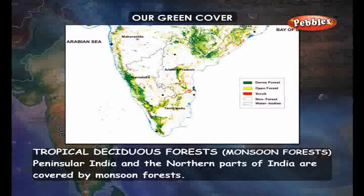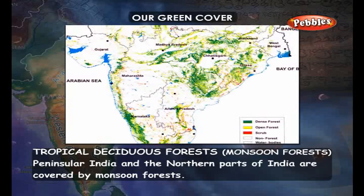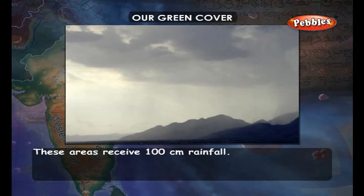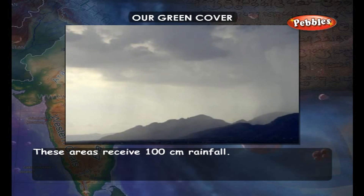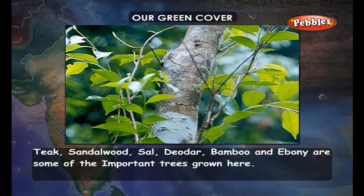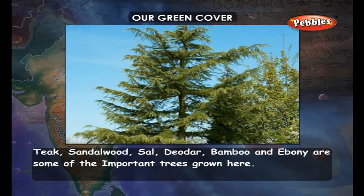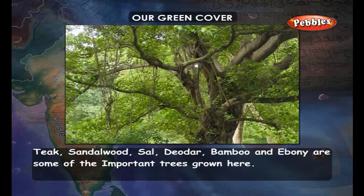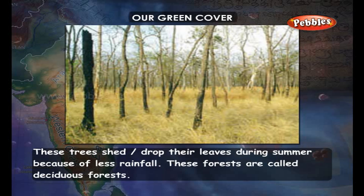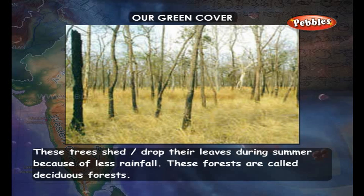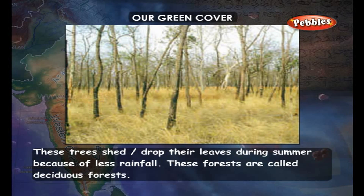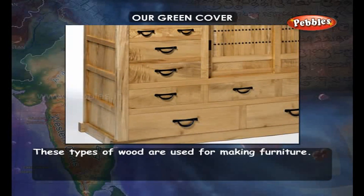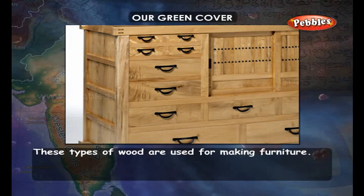Tropical Deciduous Forests, or Monsoon Forests, cover peninsular India and the northern parts of India. These areas receive 100 centimeters of rainfall. Teak, sandalwood, sal, deodar, bamboo, and ebony are some important trees here. These trees shed their leaves during summer because of less rainfall, which is why they are called deciduous forests. This type of wood is used for making furniture.